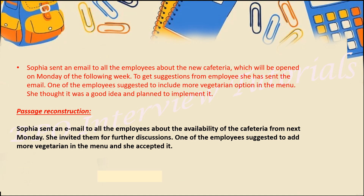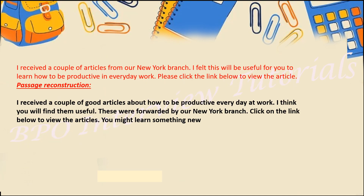The second character is the employees — there are no individual names for them. A new cafeteria is opening in the office on Monday. Sophia thought of getting suggestions from employees, who suggested more vegetarian options. In this way you reconstruct the passage. The reconstructed version is visible on screen below.